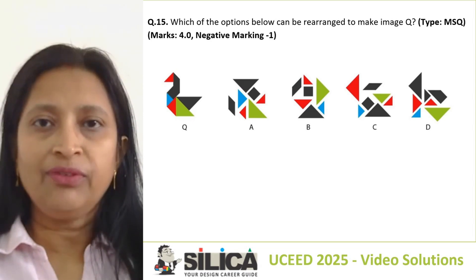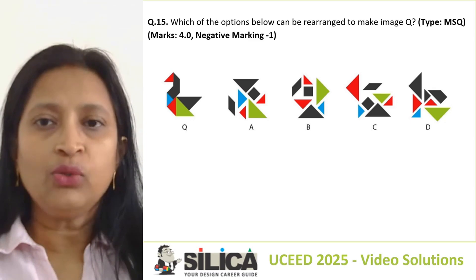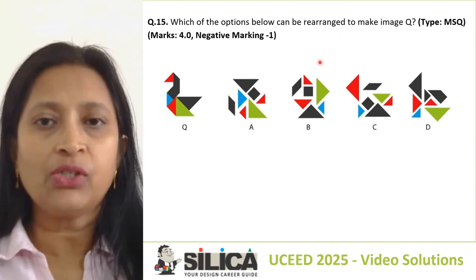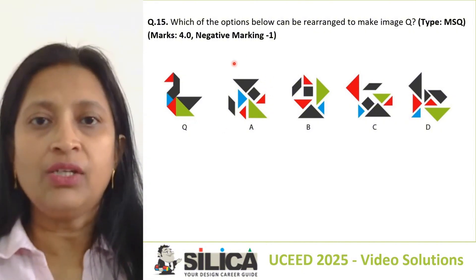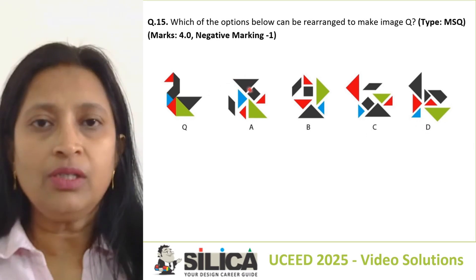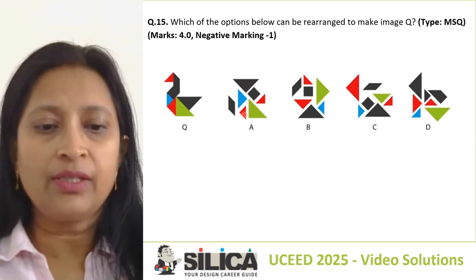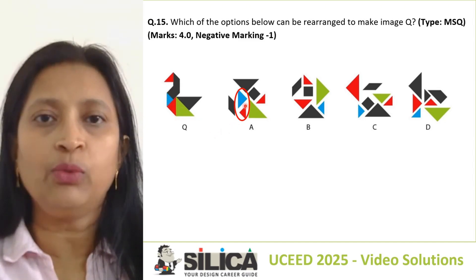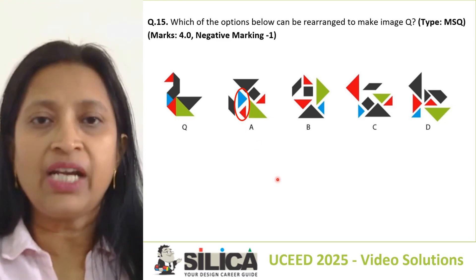Let's solve question number 15 of UC 2025 paper. It's an MSQ, which means there could be more than one correct answer. The question asks which of the options can we rearrange to make image Q. Checking option A: all the shapes are correct, but blue and red have been interchanged — blue is smaller and red is bigger here, whereas in the image blue is bigger and red is smaller. So option A will not be correct.